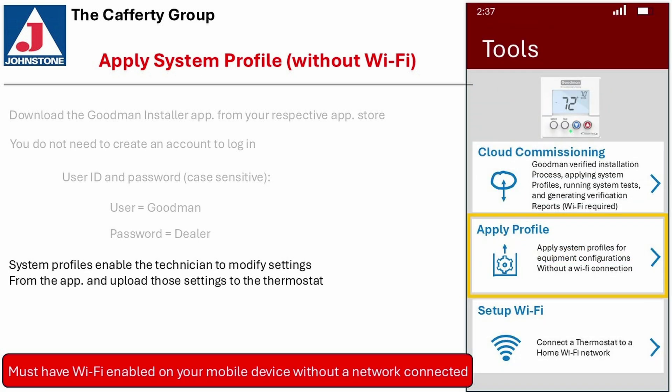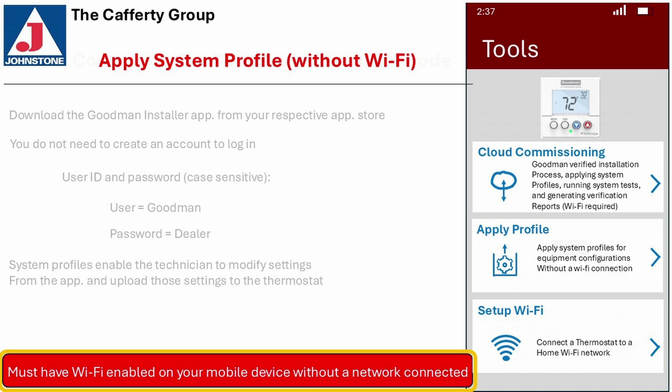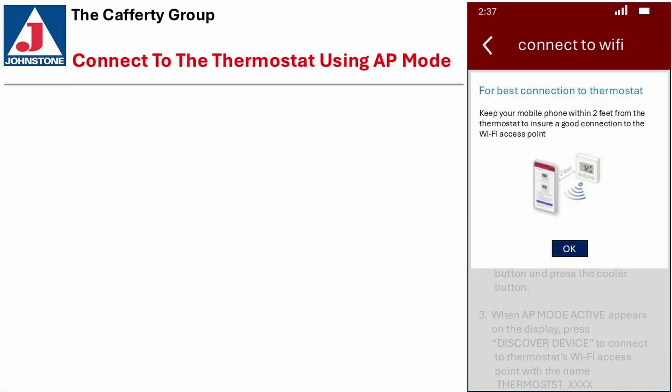System profiles enable the technician to modify settings from the app and upload those settings to the thermostat. You must have Wi-Fi enabled on your device if you do not have a network connection, connecting to the thermostat using AP mode.